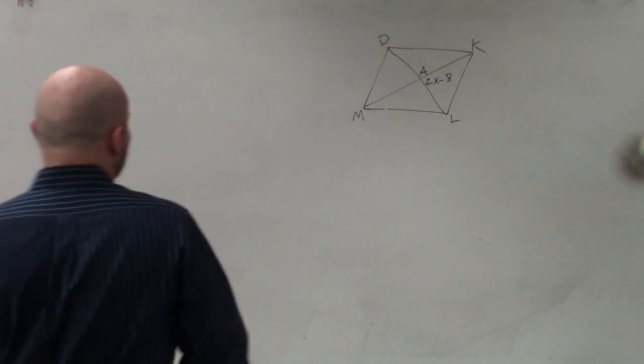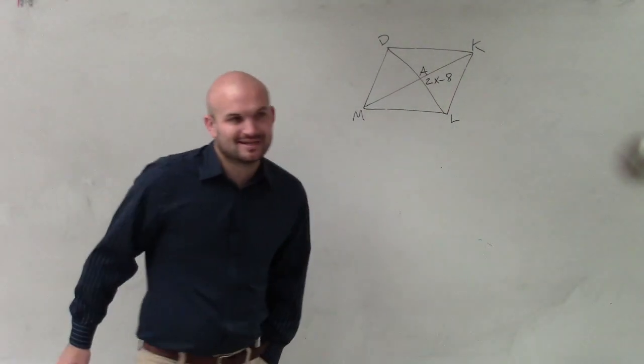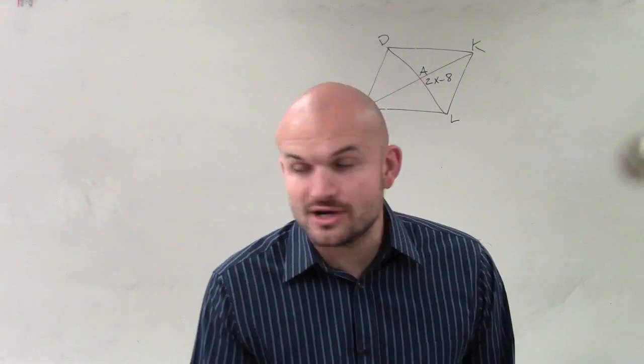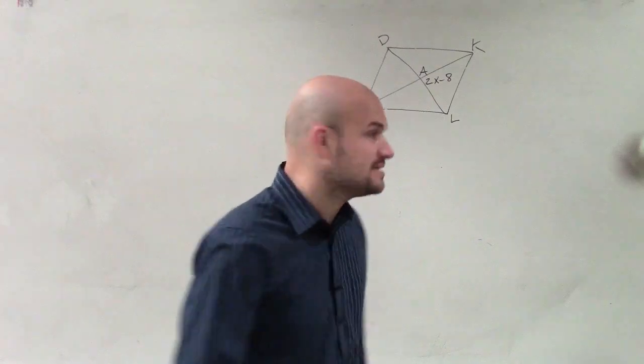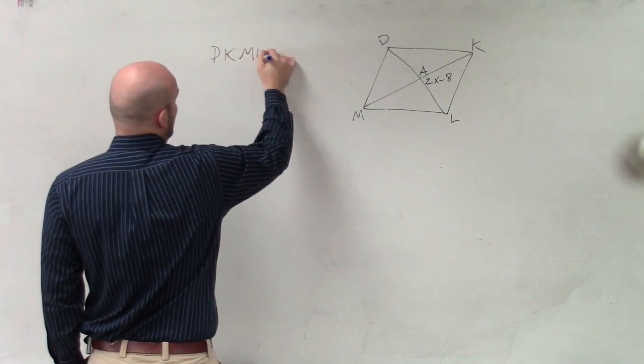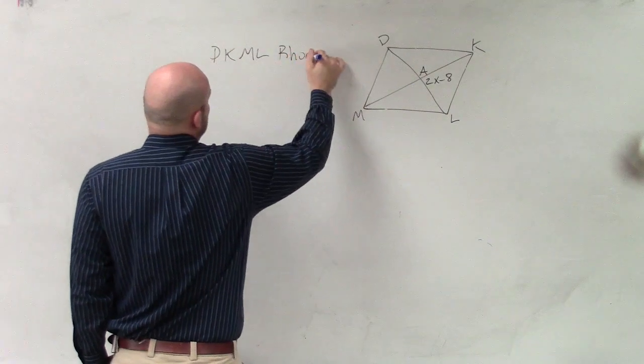Alright. So ladies and gentlemen, what they're asking us to do in this problem, Dominic, is they're asking us to go through and find the measure of x. Now, they say that DKML is a rhombus.